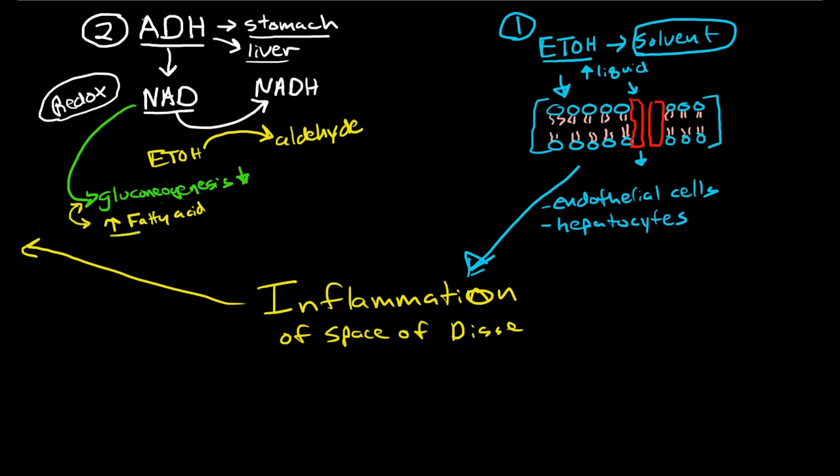The liver increases fatty acid. Now, because if we drink heavy amounts, large amounts of alcohol all the time, we are going to be chronically suppressing gluconeogenesis and chronically increasing fatty acid production.